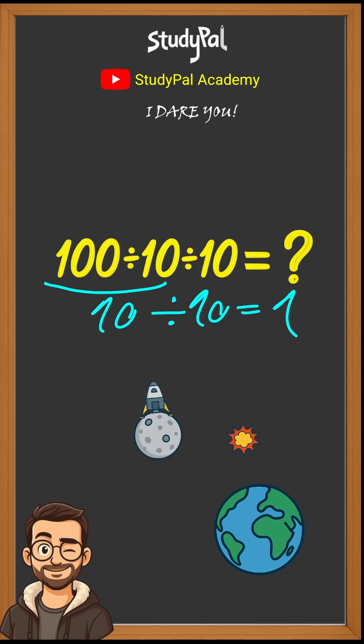In another way we can say first 10 divided by 10 is 1, and then 100 divided by 1 is 100. But which one is correct?